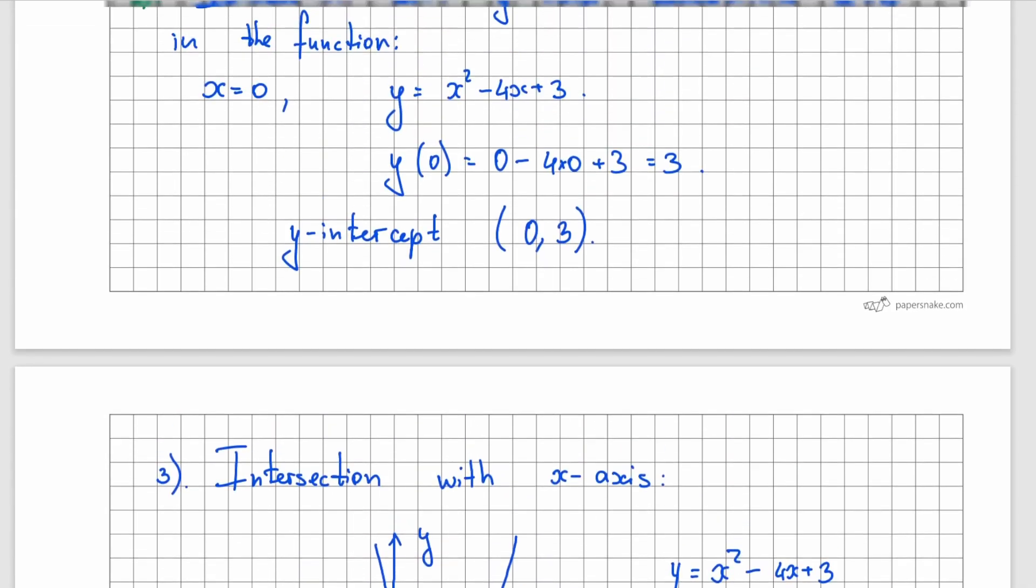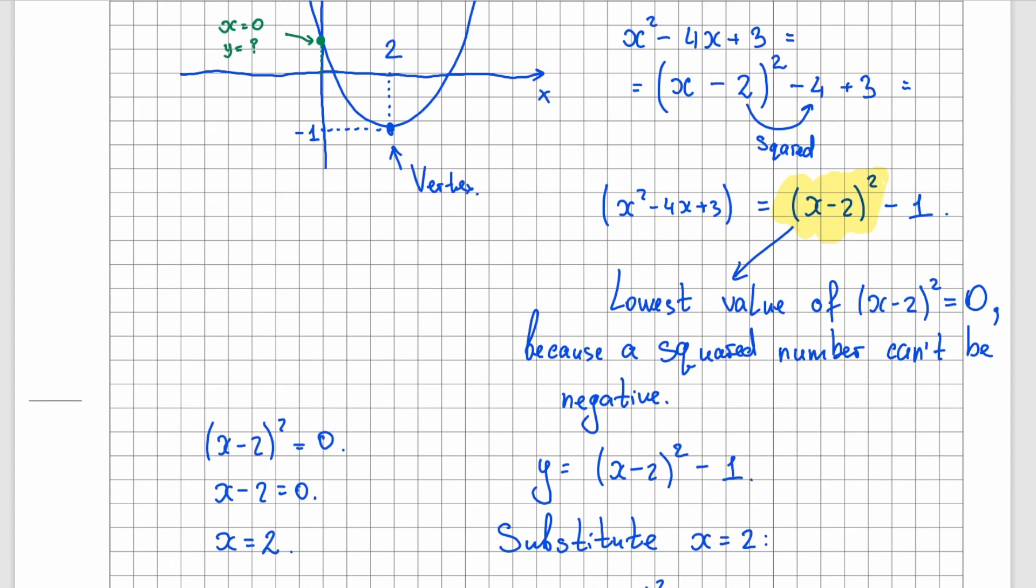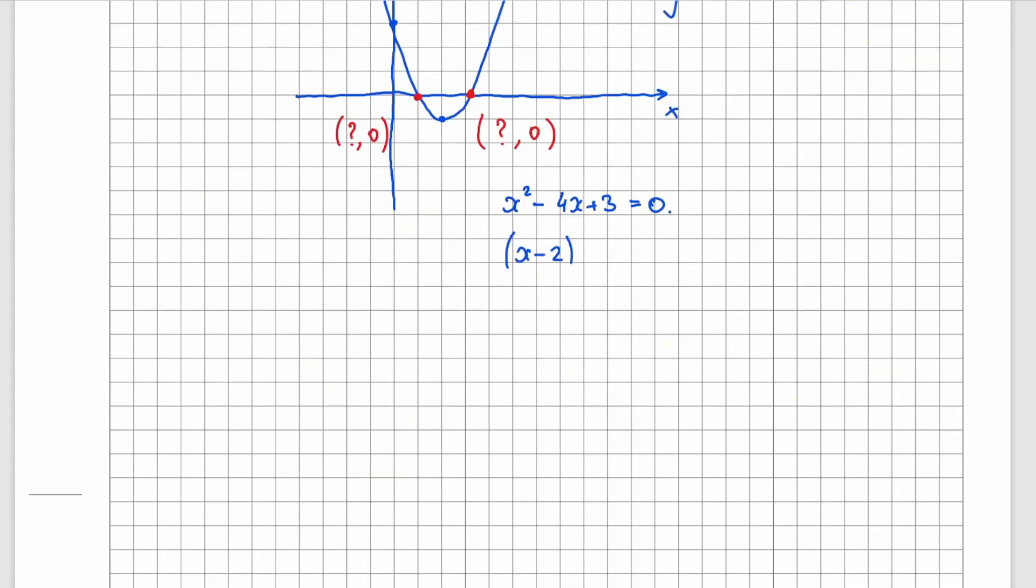Since we have already completed the square previously, let's use our result. x minus 2 squared minus 1 is equal to 0. So I will take negative 1 to the right-hand side, and take the square root. It's either positive 1 or negative 1. Bring negative 2 to the right-hand side, and get either x equals to 3 or x equals to 1.